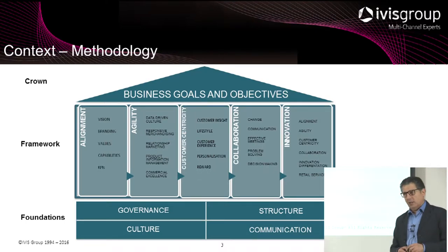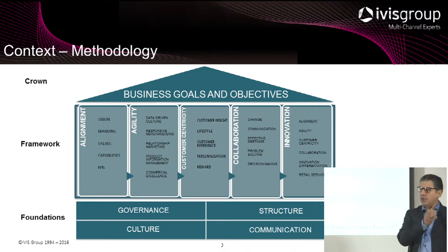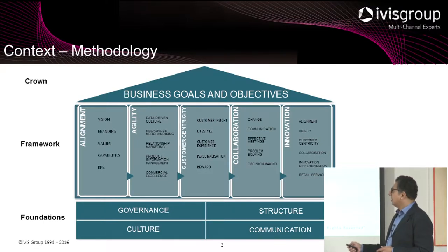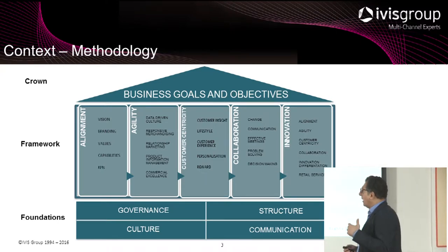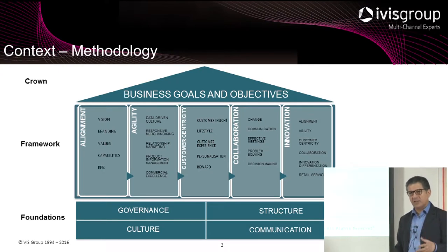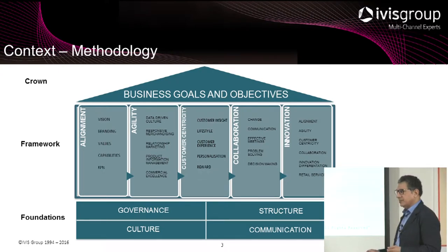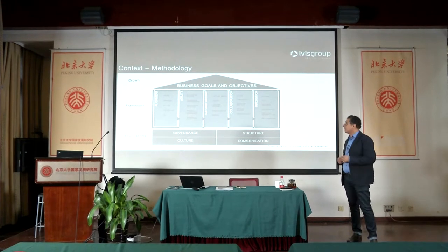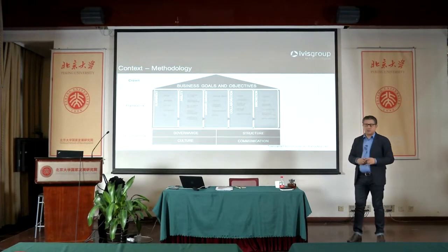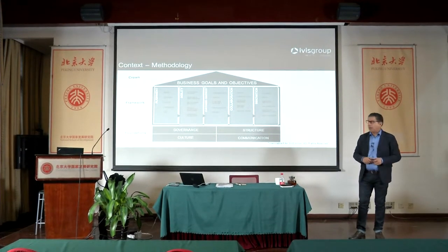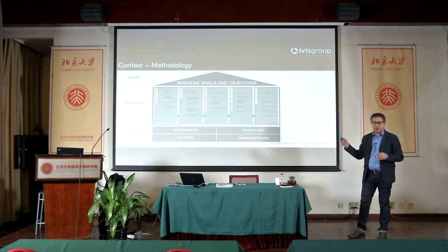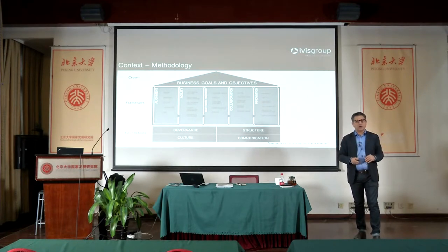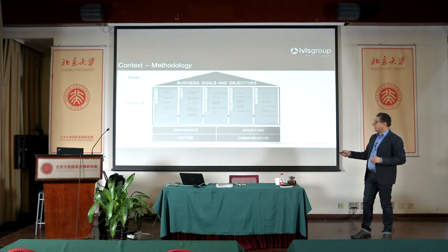We then examine the framework itself: alignment — whether the organization is aligned to the vision across departments; agility — whether the organization is agile enough; customer centricity; collaboration; and innovation as an enabler. The crown is the business goals and objectives. I'll begin with business goals, because that's usually the starting point, then cover the framework, and end with the foundations.